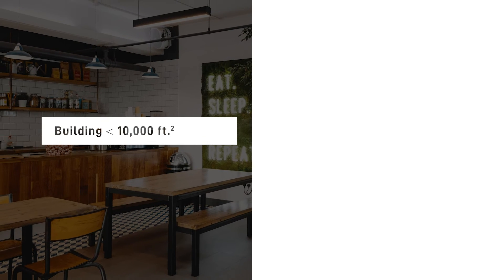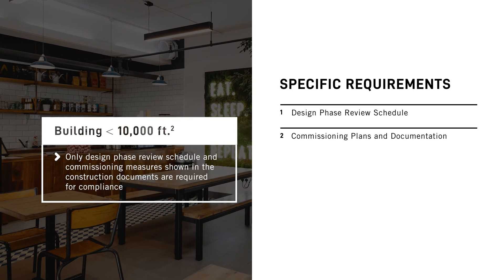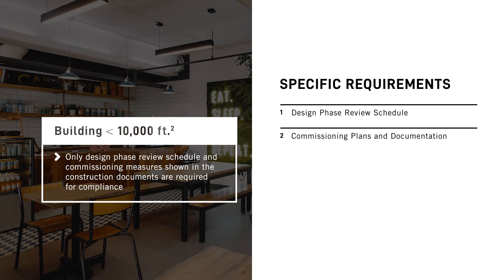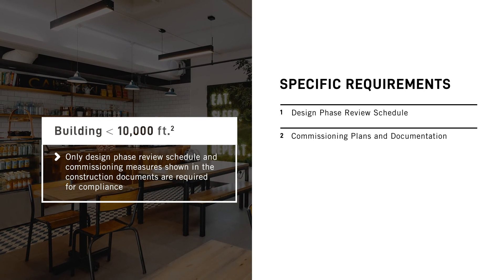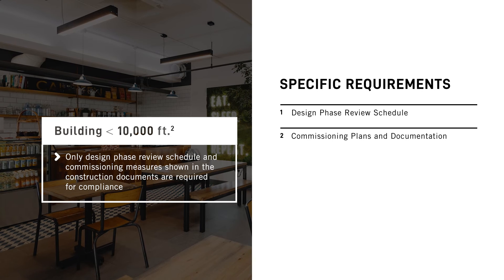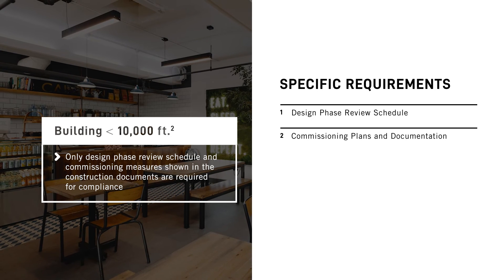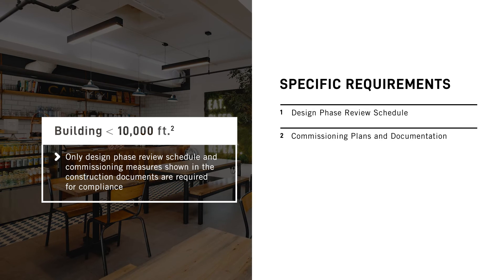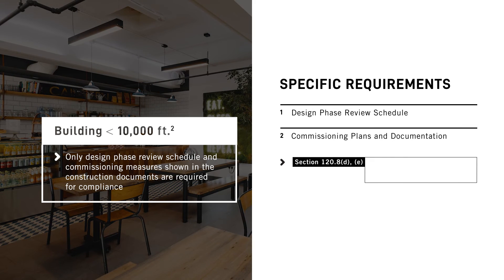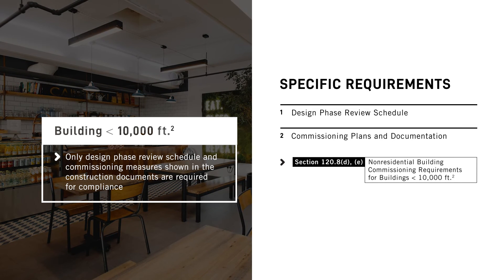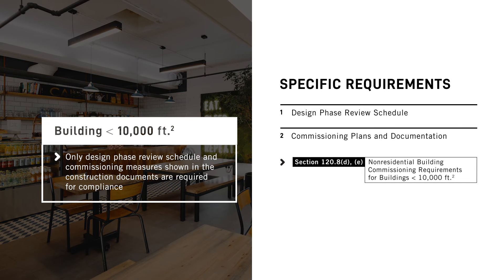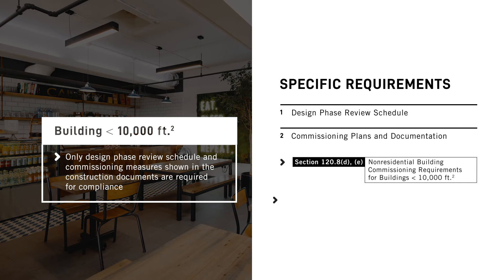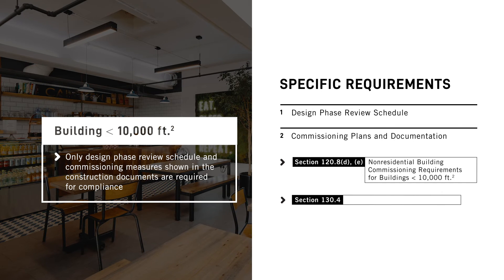For buildings less than 10,000 square feet, only the design phase review schedule and commissioning measures shown in the construction documents are required to be in compliance with the Energy Code. While functional performance testing doesn't have to be documented as part of the commissioning process described in Section 120.8 for buildings less than 10,000 square feet, acceptance tests still need to be conducted to get an occupancy permit. This is outlined in Section 130.4.